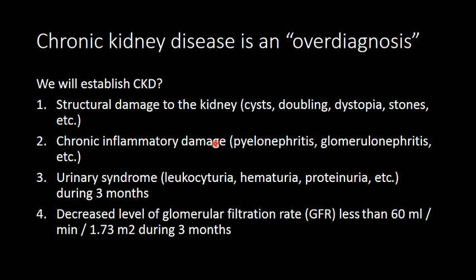If a patient has changes in urine analysis — such as glycosuria, hematuria, proteinuria, crystalluria, or bacteriuria — persisting for three months, CKD will be established. Or, if there is just a decreased level of glomerular filtration rate less than 60, for three months, CKD will be established as well.